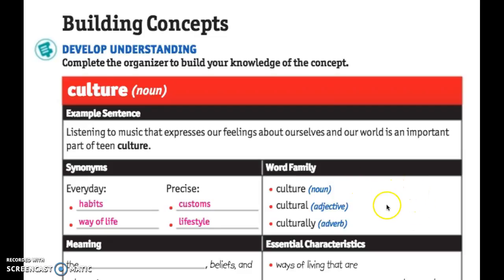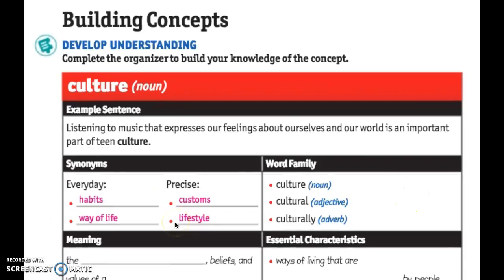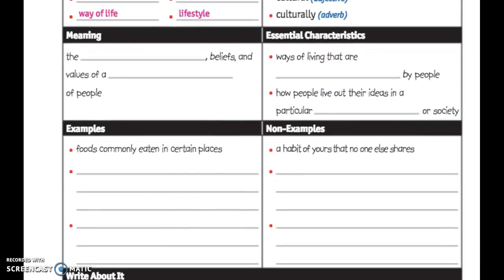So once you have those written down, let's move on to the meaning of the word culture. The meaning of the word culture is the art, beliefs, and values of a group of people. Teens are a group of people — you may have a set of beliefs, art, or values. When it says art, it could also be music. But if you go to a different country, like Israel or Africa, they're gonna have different art, beliefs, and values because they are a different group of people.